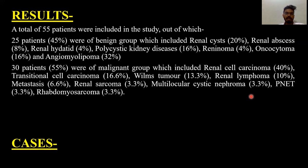Results: A total of 55 patients were included in the study. Out of which 25 patients, 45%, were of the benign group, which included renal cysts 20%, renal abscess 8%, renal hydatid 4%, polycystic kidney disease 16%, reninoma 4%, oncocytoma 16%, and angiomyolipoma 32%.